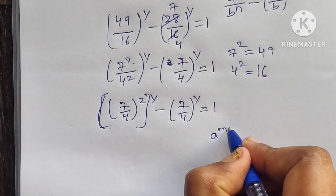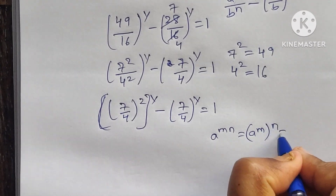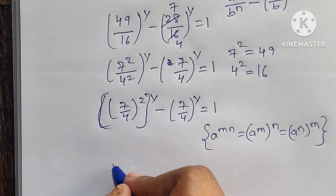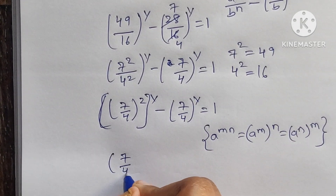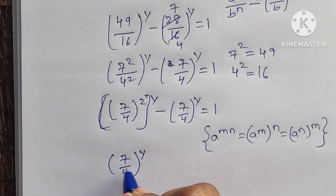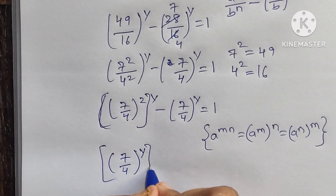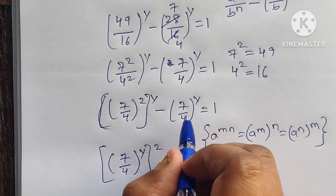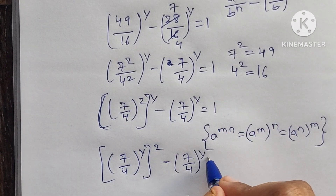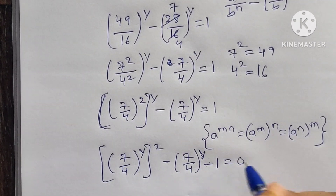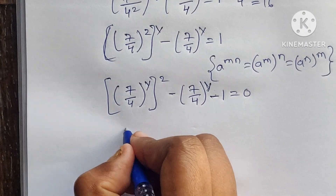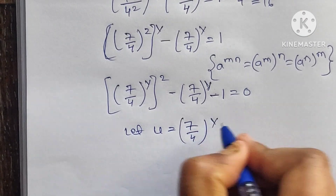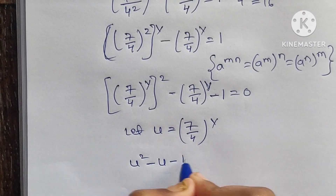Now using the formula: a to the power of m times n equals a to the power of m to the power of n. I am going to apply this formula here. So we can write it as (7 divided by 4) to the power of y whole squared, minus (7 divided by 4) to the power of y, minus 1 equals 0. Let's consider u equals 7 divided by 4 whole to the power of y.